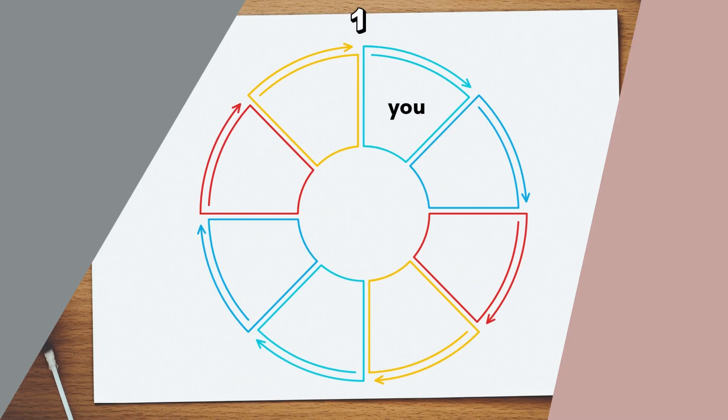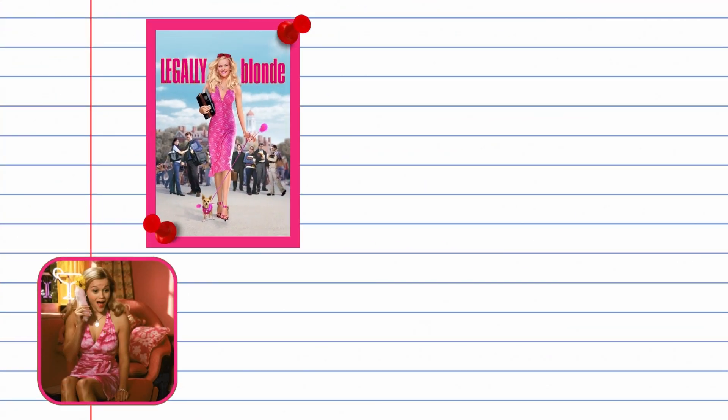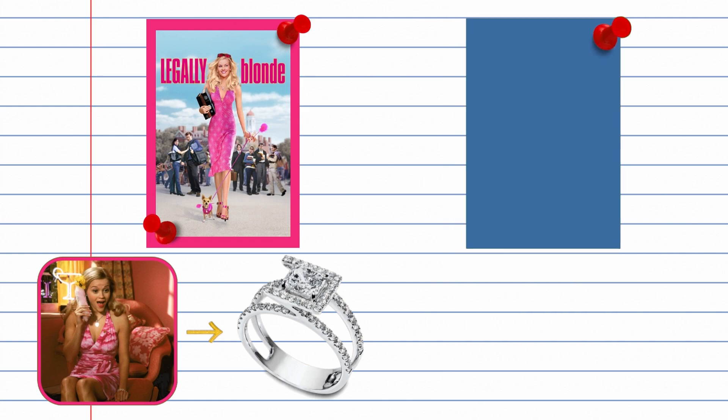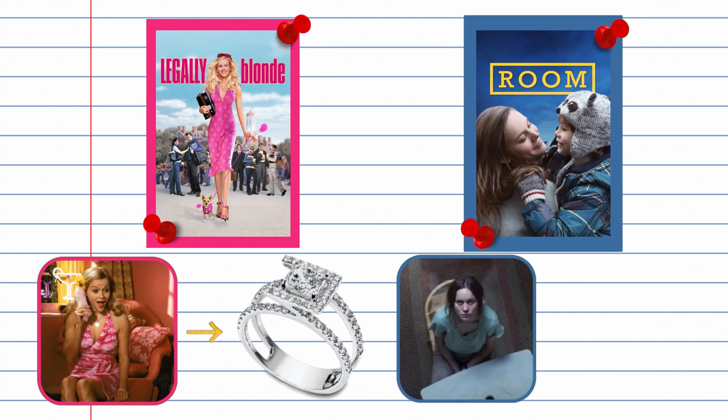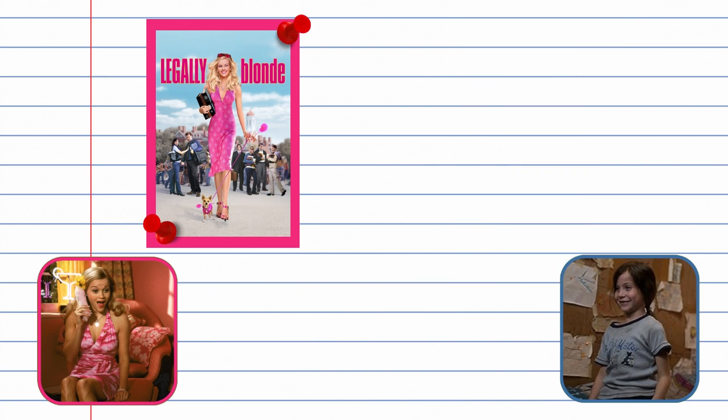We start with 'You.' Here we meet the main character. Who is your story about? You introduce the world and identify your main character's comfort zone. Our story starts with our characters in a familiar place, about to learn something that will shake up their world. In Legally Blonde, Elle Woods is living her best life, dreaming of her fairy tale proposal. In Room, Brie Larson's character, Ma, is trapped in a garden shed where she secretly dreams of one day escaping with her son.